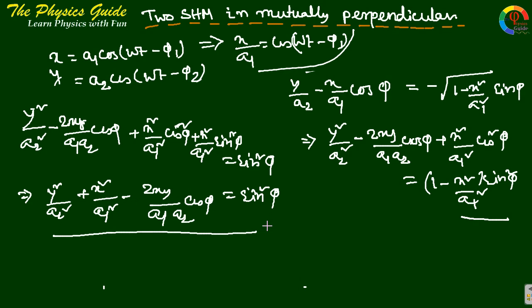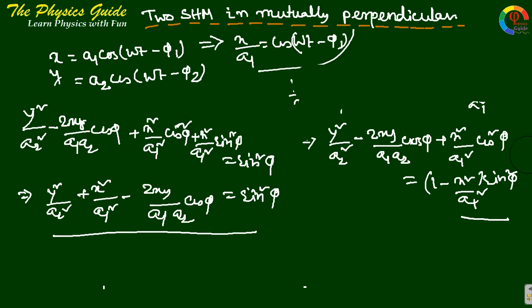This is the basic equation for the superposition of two mutually perpendicular simple harmonic motions. From mathematics, we recognize this as the equation of an ellipse. There will be some special cases to consider.